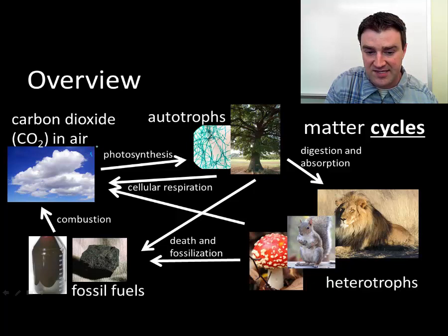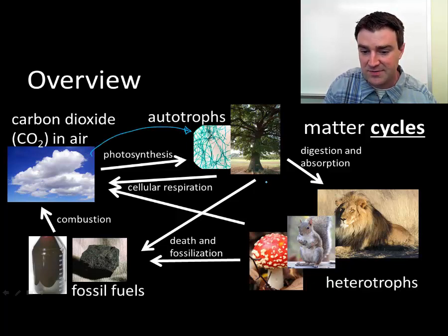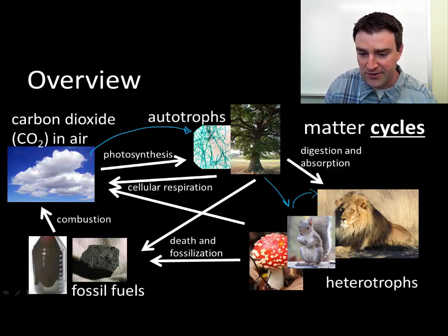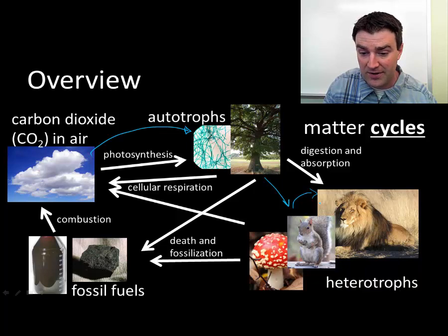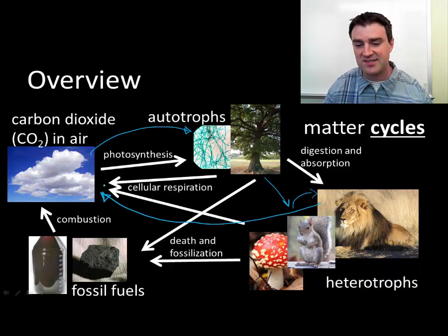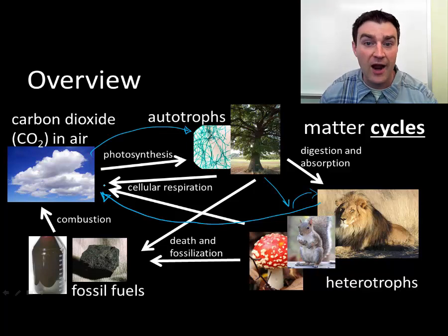We can see with the arrows here that carbon dioxide can be taken up by autotrophs like plants. Maybe those plants get eaten by herbivores, and maybe those herbivores get eaten by carnivores. But then those carnivores burn some of their carbon through respiration and breathe it out, returning it to the air.